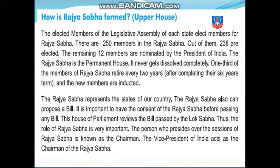Now, how is the Rajya Sabha formed? The elected members of the legislative assembly of each state elect the members of the Rajya Sabha. That means we don't directly vote for Rajya Sabha members — the people we have already elected, they among themselves elect the members for the Rajya Sabha. It is like how head prefects are chosen not by students directly, but by the prefects among themselves. In this way, the Rajya Sabha is formed. There are 250 members in the Rajya Sabha, out of which 238 are elected.